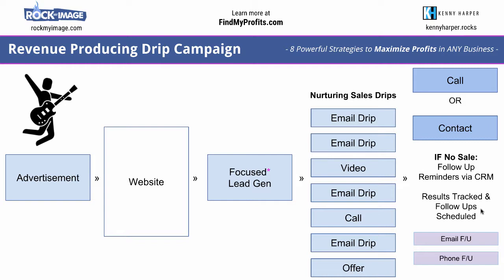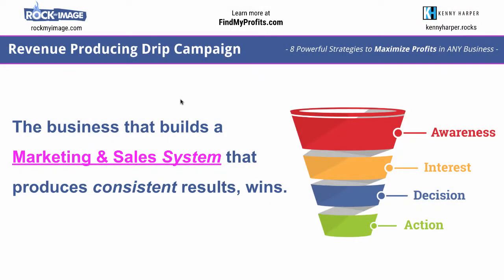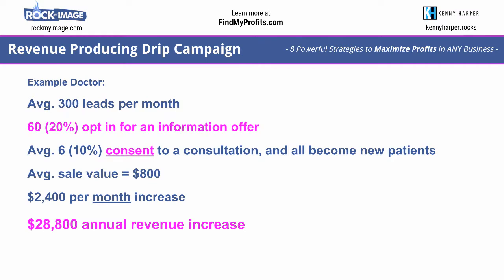You can track all of this in a CRM system, have it all automated with smart behavior marketing — really cool stuff. We can all start off with just doing a simple drip campaign sharing the value you can provide. Write this down if you need to: the business that builds a marketing and sales system that produces consistent results wins. Once you know how to build your marketing machine that delivers consistent results, that's how you know you're on point.